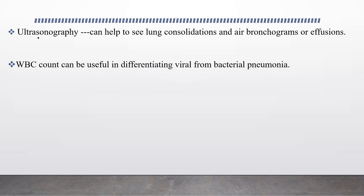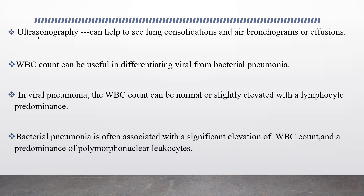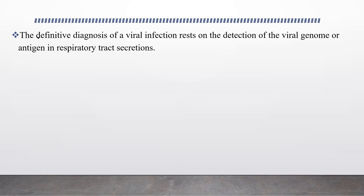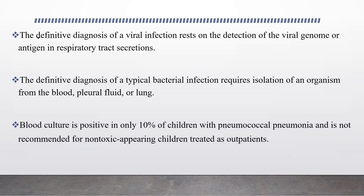WBC count can be useful in differentiating viral from bacterial pneumonia. In viral pneumonia, the WBC count can be normal or slightly elevated with lymphocyte predominance. Bacterial pneumonia is often associated with significant elevation of WBC count and predominance of polymorphonuclear leukocytes. Definitive diagnosis of viral infection rests on detection of the viral genome or antigen in respiratory tract secretions, and definitive diagnosis of typical bacterial infection requires isolation of an organism from blood, pleural fluid, or lung. Blood culture is positive in only 10% of children with pneumococcal pneumonia and is not recommended for non-toxic children treated as outpatients.